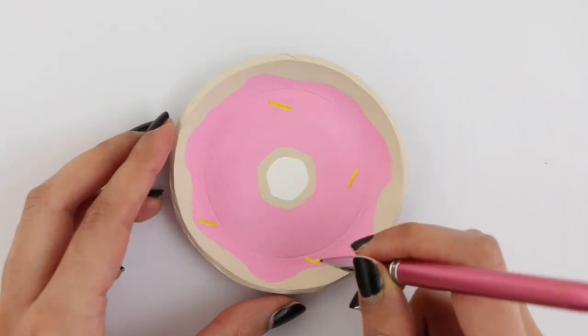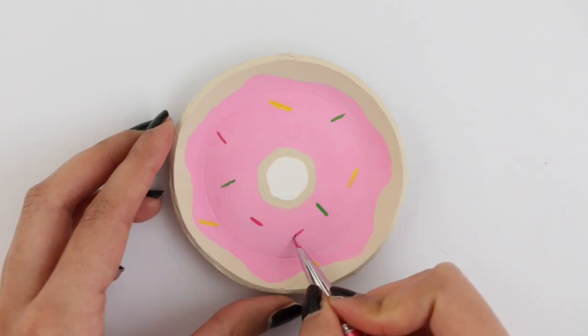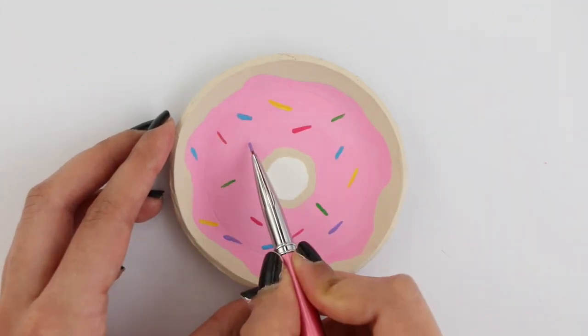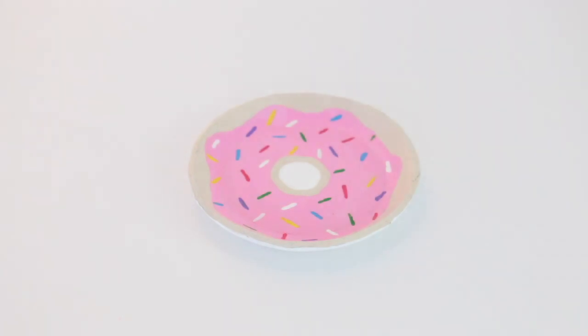Using yellow, green, pink, blue, purple, and white, I'm going to add on the sprinkles. Don't forget to seal in the paint with a layer of mod podge. And that is pretty much it.